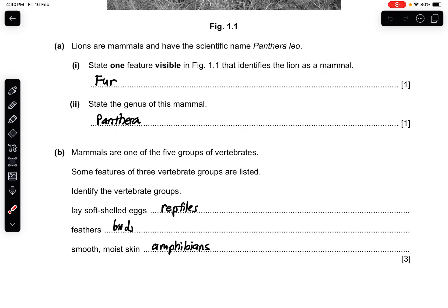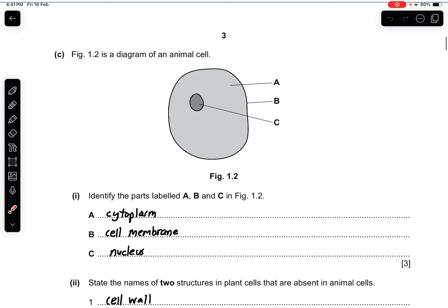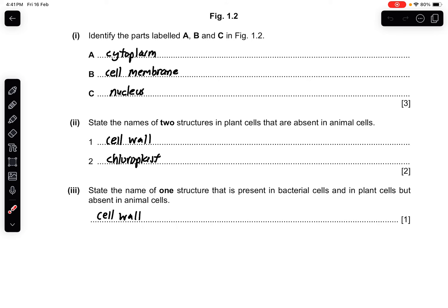Part B: Mammals are one of the five groups of vertebrates. Some features of three vertebrate groups are listed. Identify the vertebrate group. Lay soft-shelled eggs would be reptiles, feathers are birds, smooth and moist skin are amphibians. Part C: Figure 1.2 is an animal cell. Part 1: Identify parts A, B, and C. A is the cytoplasm, B is the cell membrane, C is the nucleus. Part 2: State the names of two structures in plant cells that are absent in animal cells: cell wall, chloroplast, or vacuole. Part 3: Name one structure present in bacterial and plant cells but absent in animal cells: the cell wall.